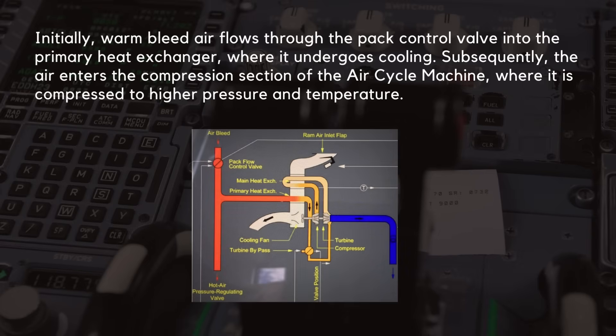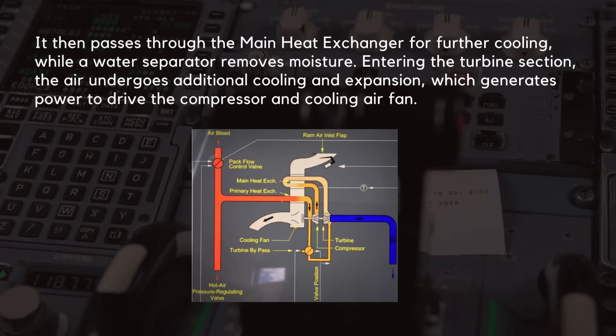Initially, warm bleed air flows through the PAC control valve into the primary heat exchanger, where it undergoes cooling. Subsequently, the air enters the compression section of the air cycle machine, where it is compressed to higher pressure and temperature. It then passes through the main heat exchanger for further cooling, while a water separator removes moisture. Entering the turbine section, the air undergoes additional cooling and expansion, which generates power to drive the compressor and cooling air fan.